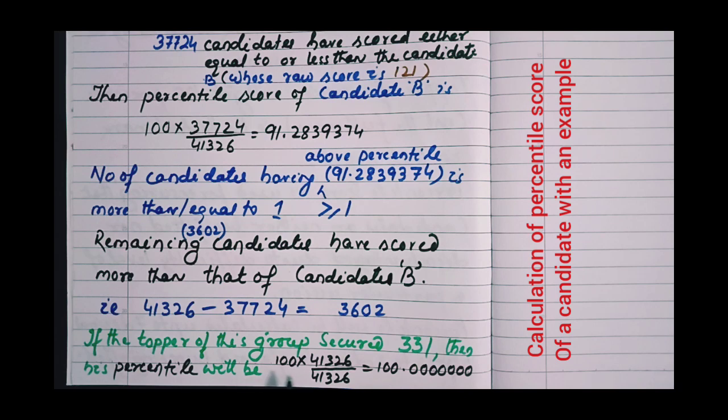If the topper of this group secured 331, then his or her percentile will be 100 times 41,326 divided by 41,326.